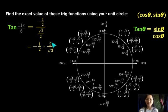Notice the 2's. There's a 2 on top and a 2 on bottom. So those cancel out and you get negative 1 over square root 3.